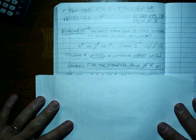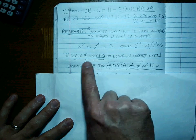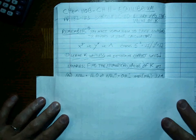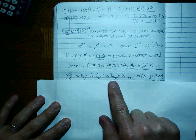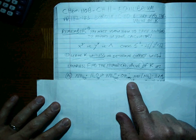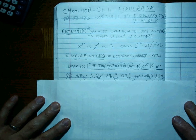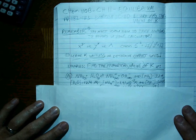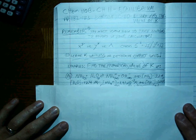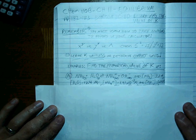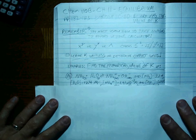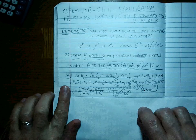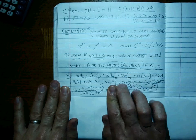Here's the example problem. Find the numerical value — meaning don't worry about the units — of K, given the following information. We have this reaction: ammonia gas plus water in the gaseous state is in equilibrium with the ammonium ion in solution plus the hydroxide ion in solution. K is equal to the products over the reactants.